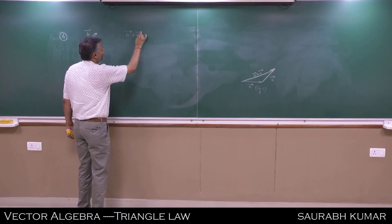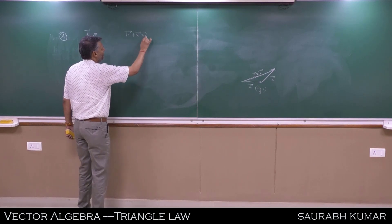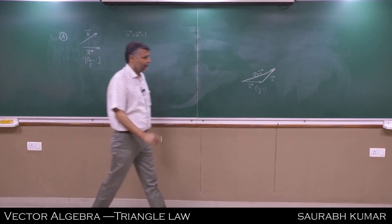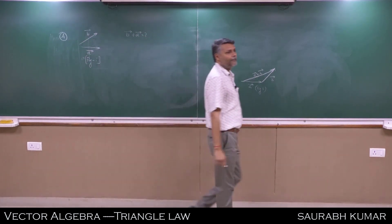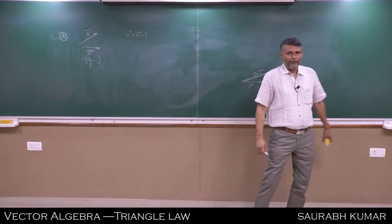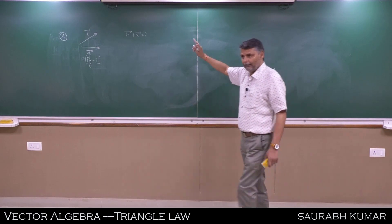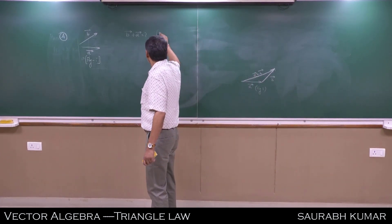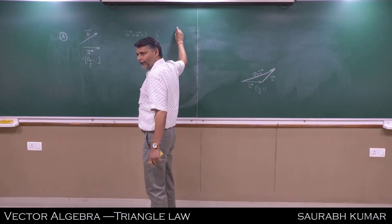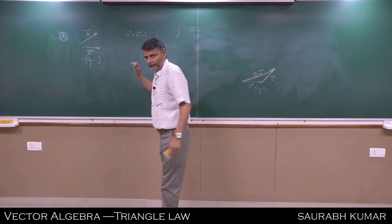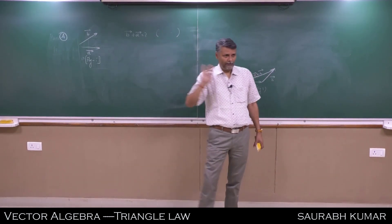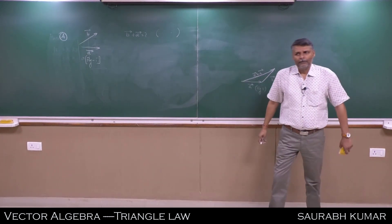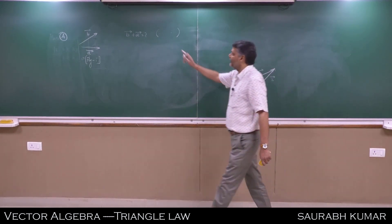Refer to the same figure one where A and B are given. The new question is: find vector B plus vector A. So now B plays the role of the first vector. Draw the diagram yourself.